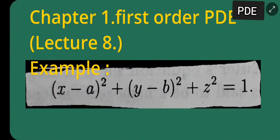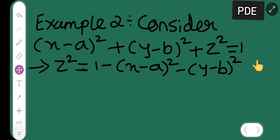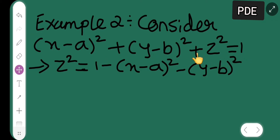In this lecture on PDE, I will cover first order PDE — that is Chapter 1, Lecture 8. The example is: (x - a)² + (y - b)² + z² = 1. Consider this equation from the previous lecture. This is Lecture 8. Consider (x - a)² + (y - b)² + z² = 1.